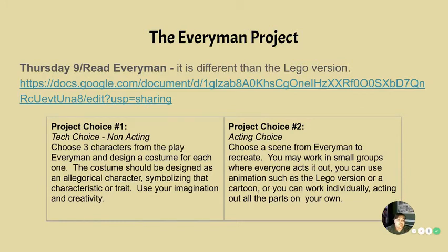Project number two is the acting choice. If you would rather act than be a tech person, you can do this one. Choose a scene from Everyman to recreate. You can work in small groups, use animation to act it out like the Lego version we saw, or a cartoon if you have an app that can do that. Or you can work individually, acting out all the parts on your own. It's up to you — however you want to do it.